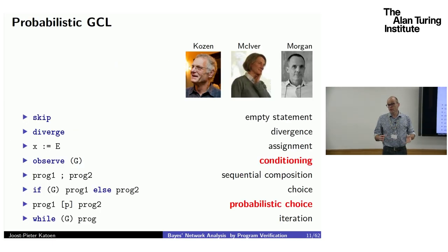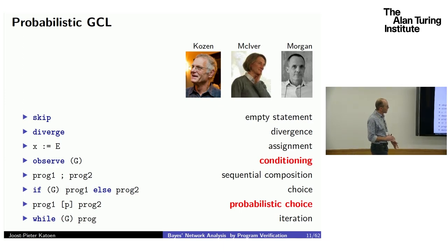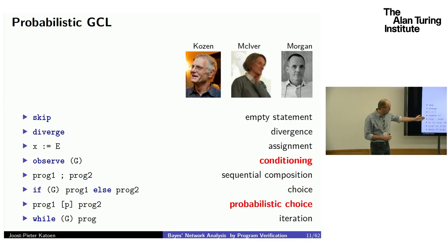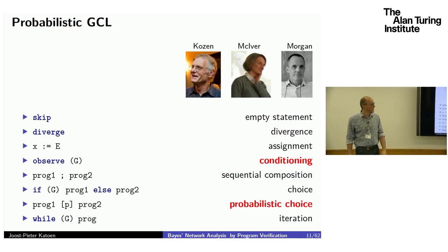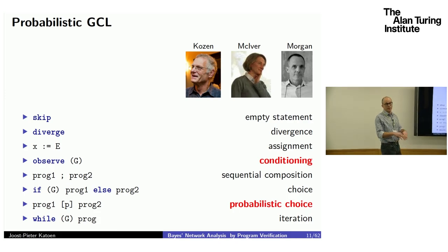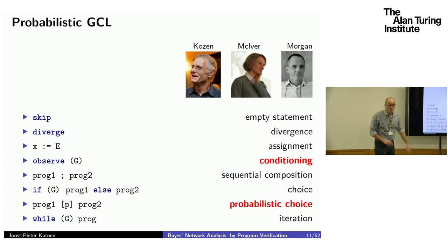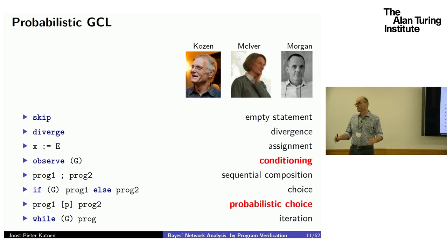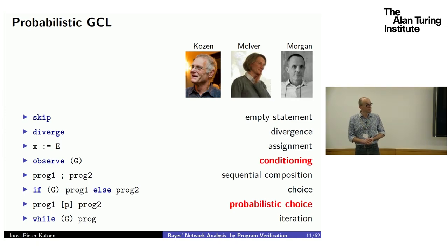The starting point is a very simple language going back to foundational work. It has the usual ingredients: skip, divergence, assignments, sequential composition, if-then-else, and while-loops. There are two special ingredients: one called 'observe g', where g is a boolean expression over program variables; and 'prog1 [p] prog2', meaning with probability p you execute prog1 and with probability 1 minus p you execute prog2. Here p can be a value or an expression in program variables.